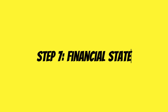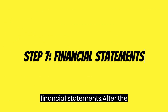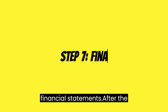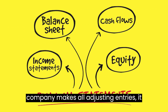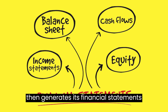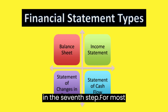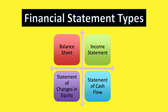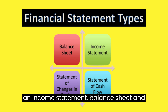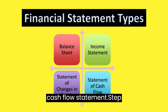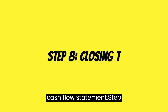Step 7: Financial statements. After the company makes all adjusting entries, it then generates its financial statements in the seventh step. For most companies, these statements will include an income statement, balance sheet, and cash flow statement.